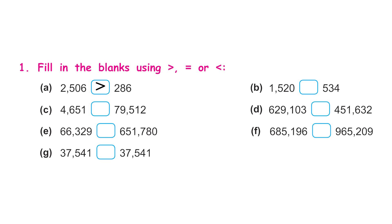Part b is similar to part a — try it yourself. For part c: count the digits — the first number has four digits and the second has five digits, so the second is greater. We write: 4,651 is less than 79,512. Parts e, f, and g you should be able to solve yourself.